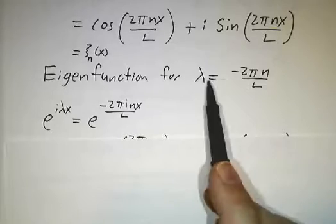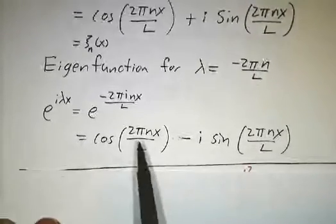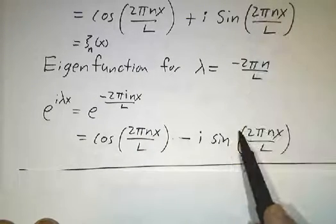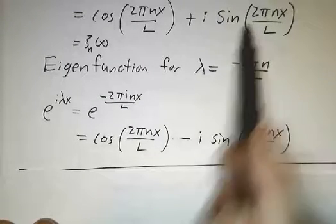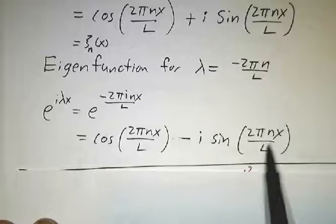That is to say, the eigenfunction from minus 2π n over L is the same cos, minus the same sin. cos plus i sin has eigenvalue 2π n over L, cos minus i sin has eigenvalue minus 2π n over L.